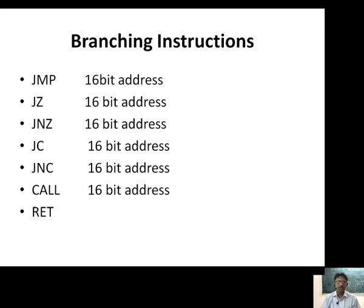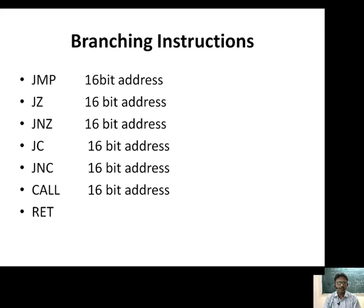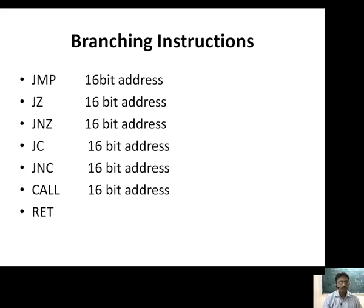Branching instructions are normally used in 8085 to change the sequence of execution of a program. Normally, the program is executed in sequence from top to bottom — the first line first, then the second and so on. But as per requirement, there may be a need to change the sequence of execution, and for that we require branching instructions.